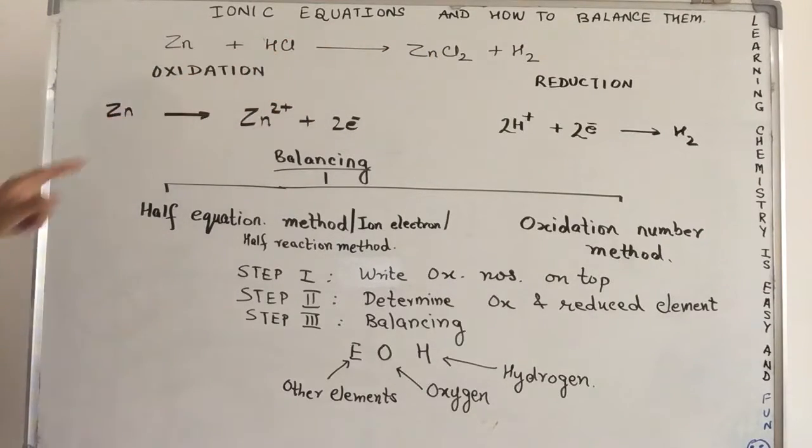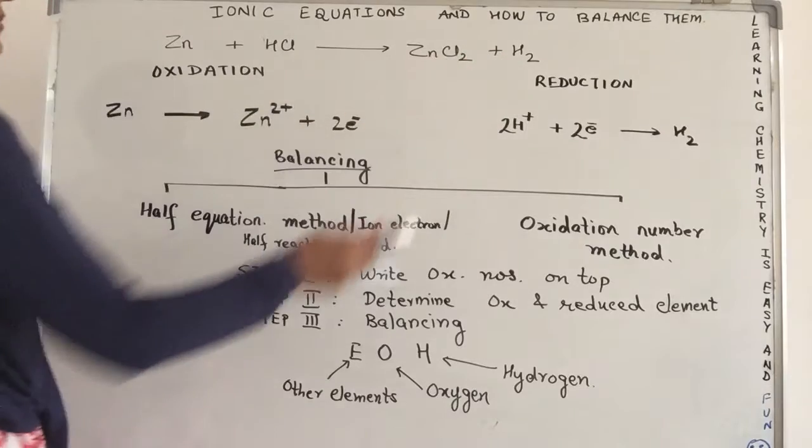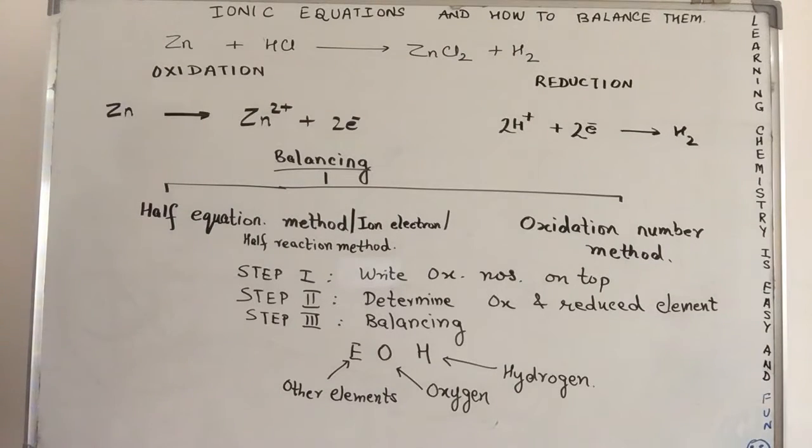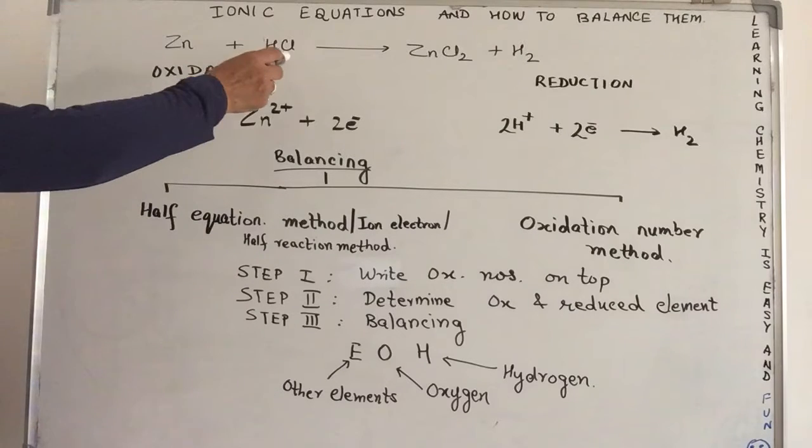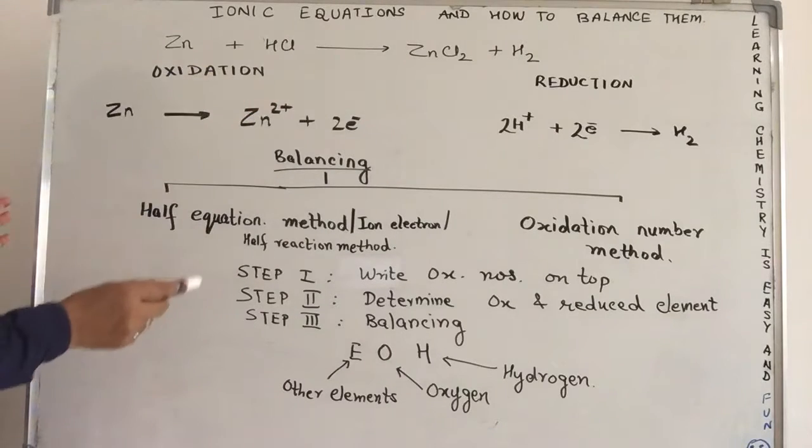Hydrogen is 1, whereas on the right hand side, hydrogen is 2. According to the law of conservation of mass, we can neither create mass nor can we destroy it. It only changes its form. So, we need to balance these equations.